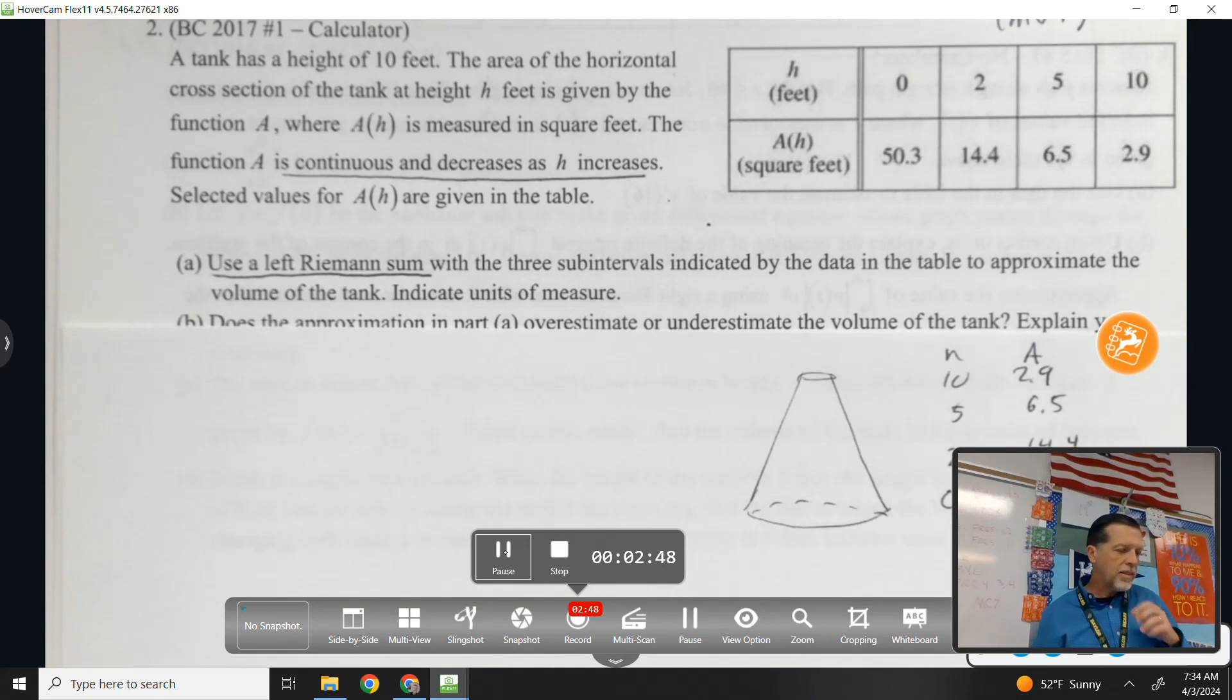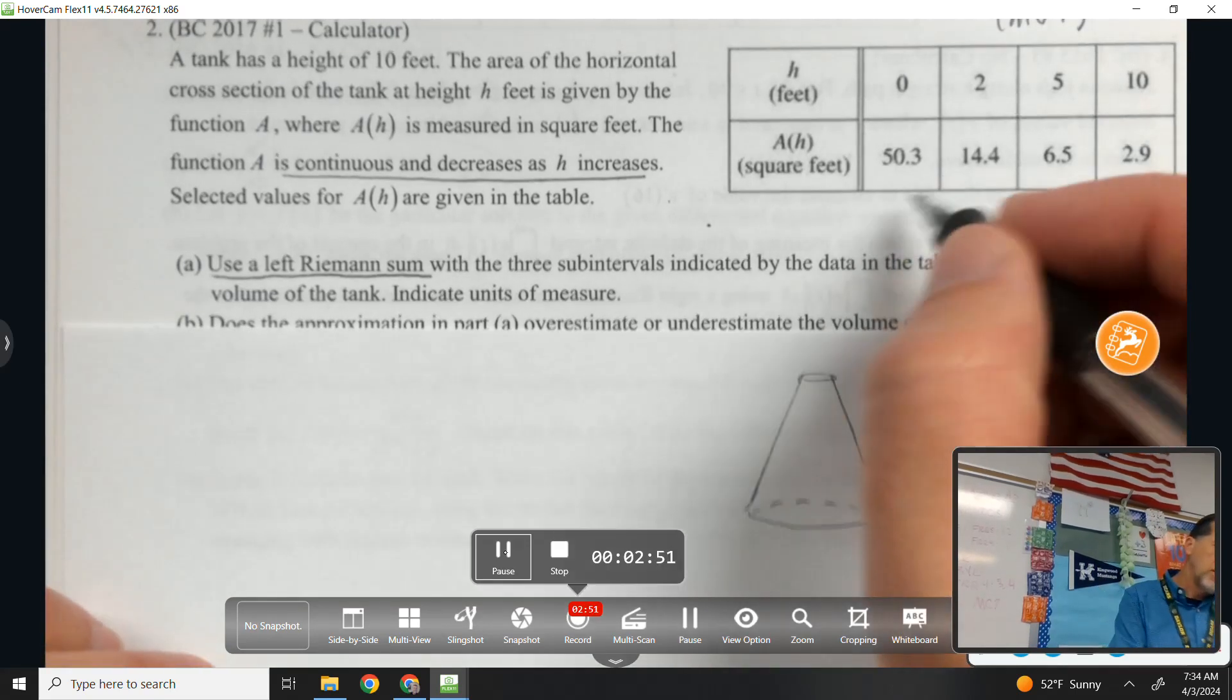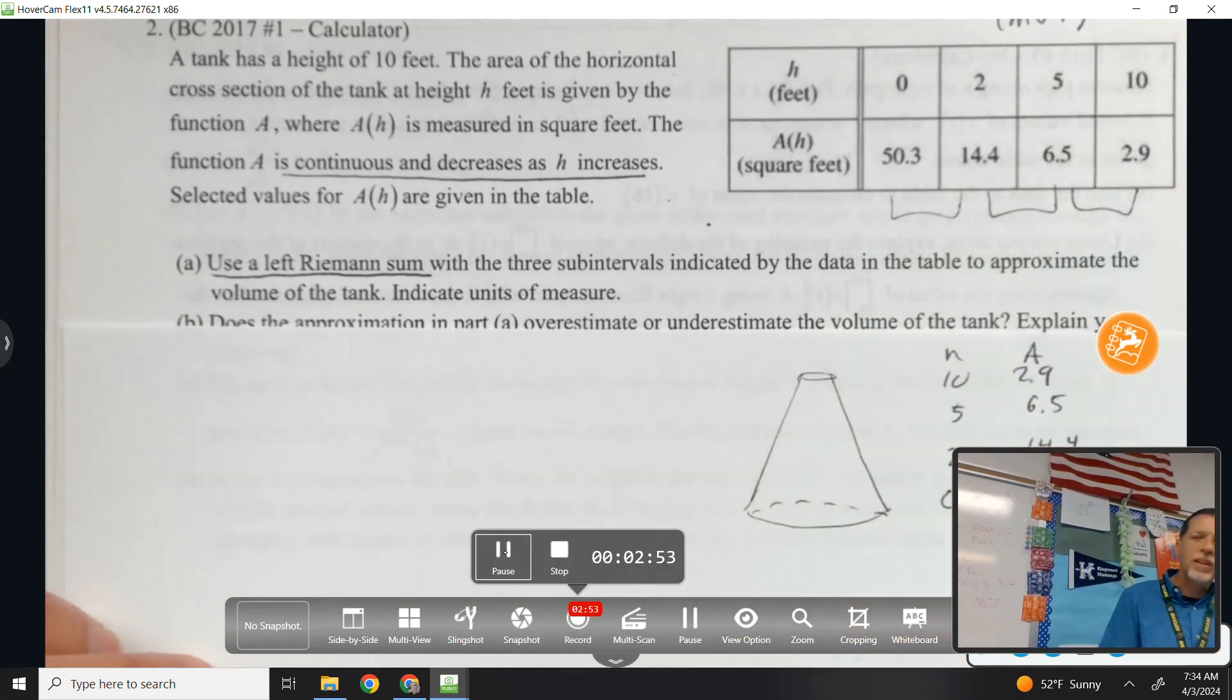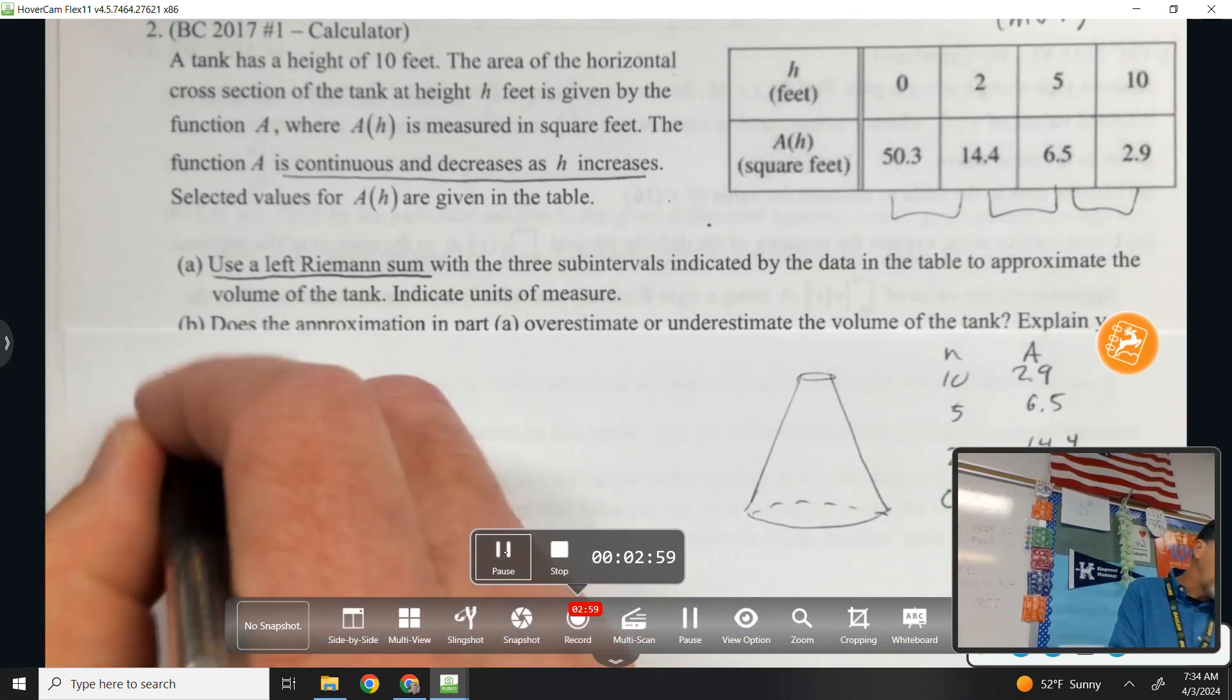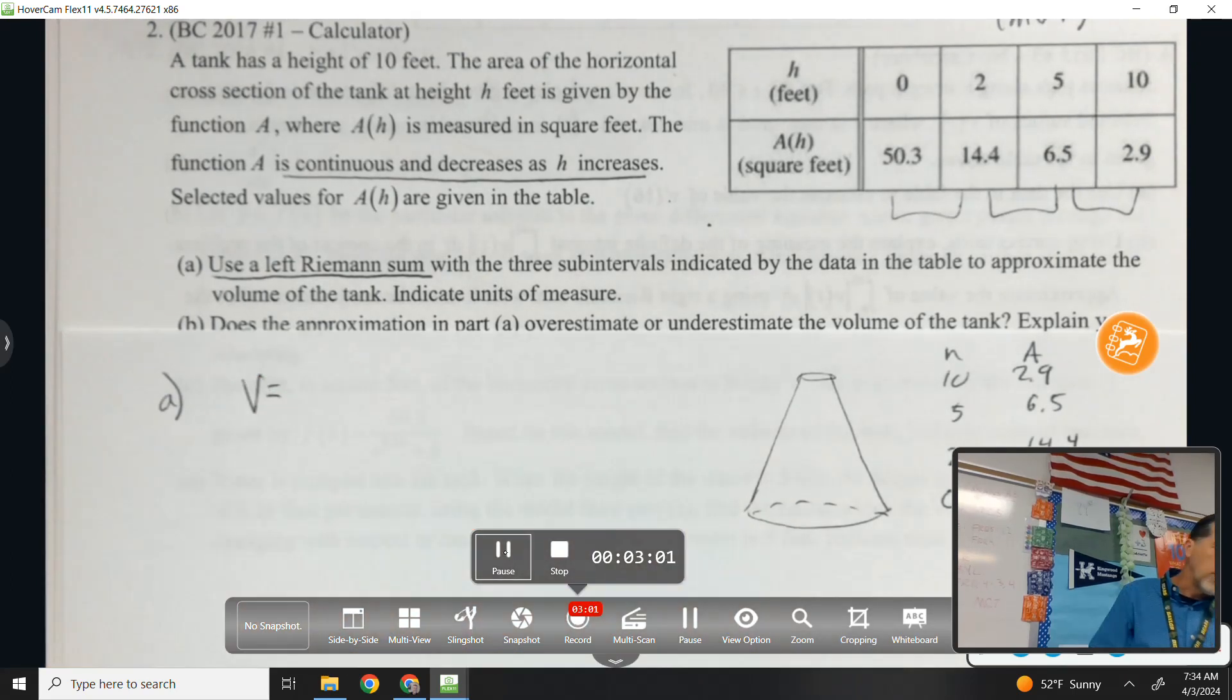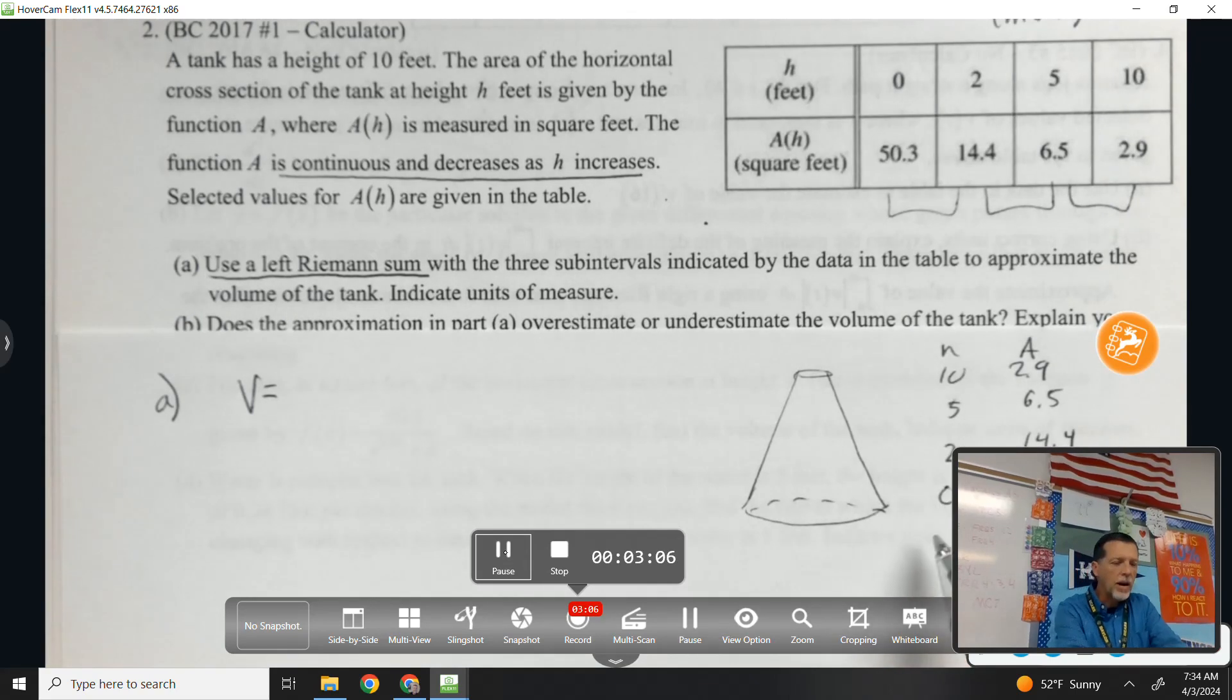So I mean, who knows? It's probably not that, but something along those lines where when our height is zero, our cross-sectional area is 50. When our height is 2, I know this is exactly what's in the table, but I'm trying to just make sense of the problem for me. Okay, so that's what the tank maybe looks like. It's certainly getting narrower as we increase.